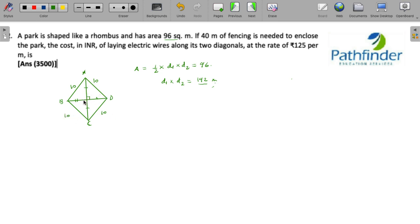In triangle AOD, this AO must be d1 by 2, this must be d2 by 2. So AO square plus OD square must be equal to AD square by Pythagorean theorem.